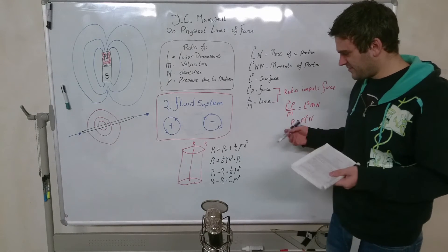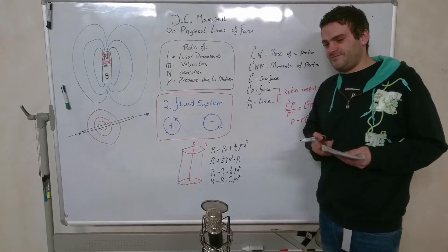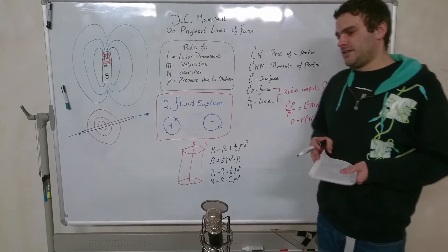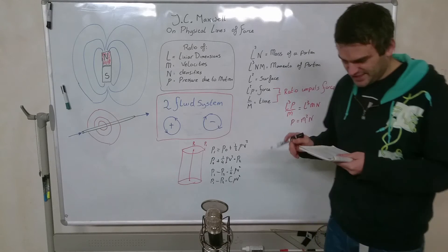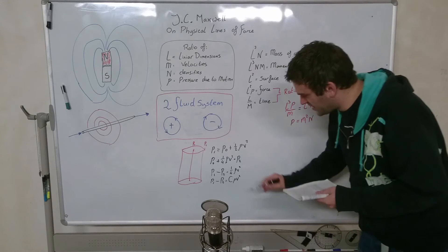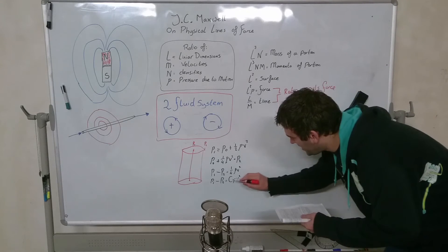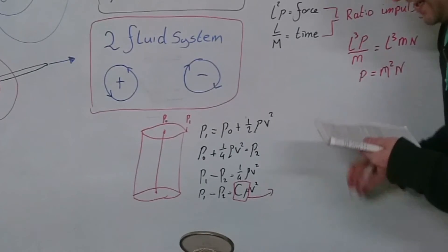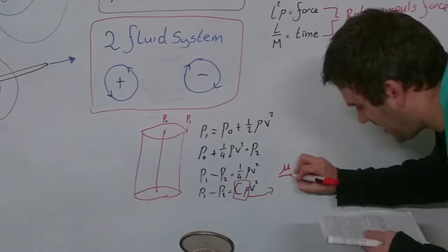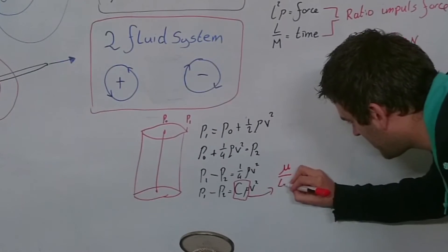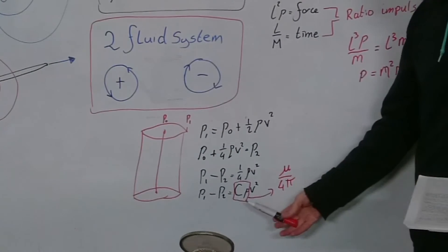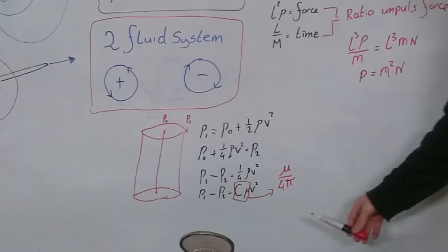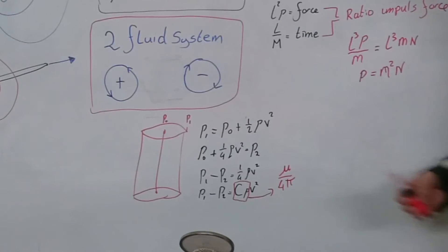In the future, so this is where Maxwell starts to use the notations well known to physicists. He says that in the future, we're going to change the C rho part, this part, he's going to write it down, mu divided by 4 pi. So a numerical quantity times the density, it's going to be mu divided by 4 pi.